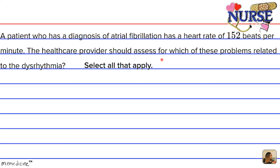Before we get into the related problems, in case you forgot what atrial fibrillation is — without giving away the answers — it's in general an irregular, often rapid heartbeat that's commonly caused by poor blood flow. We'll explain in a little more detail what it is on the following card.